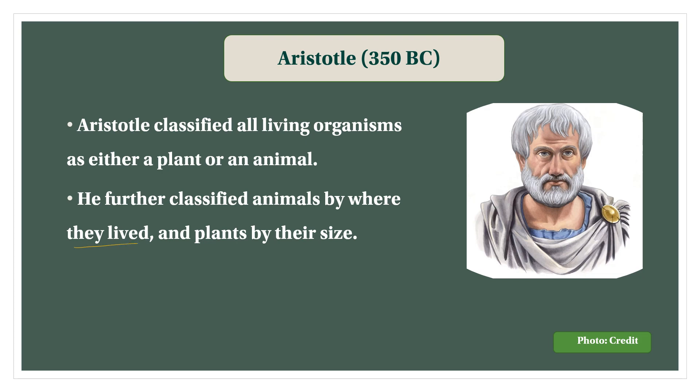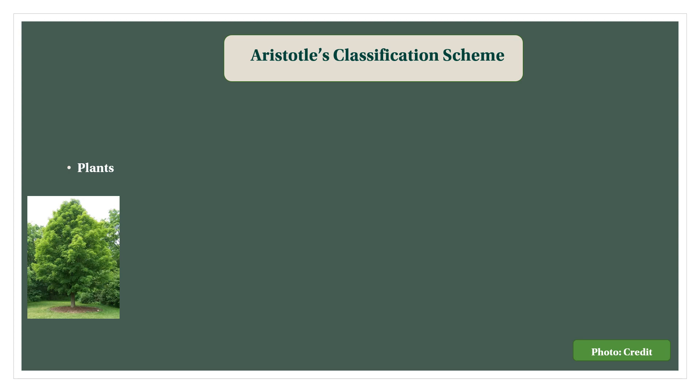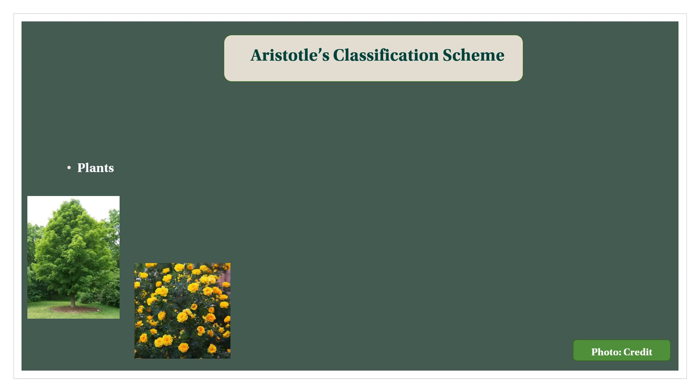Aristotle's classification system classified animals by where they live and plants by their site. This is the story of Aristotle's approach to classifying all living organisms.